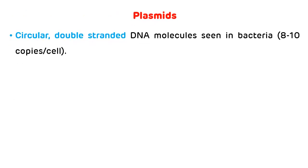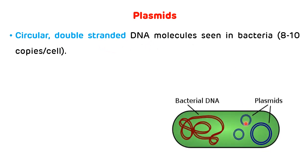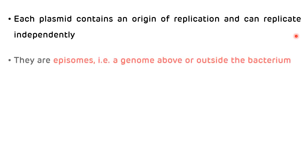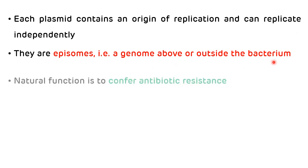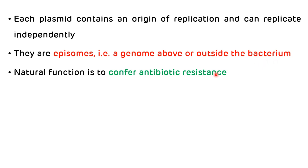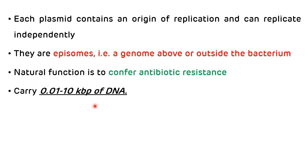Plasmids are circular double-stranded DNA molecules seen in bacteria, and they are extrachromosomal. Each plasmid contains an origin of replication (ori) and can replicate independently. They are epizomes, meaning they are the genome present above or outside the bacteria. The natural function of a plasmid is to confer antibiotic resistance to the bacteria. They can carry or transfer around 0.01 to 10 kilobase pairs of DNA.